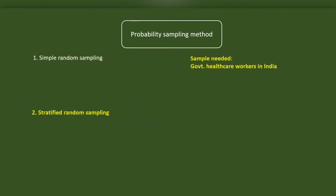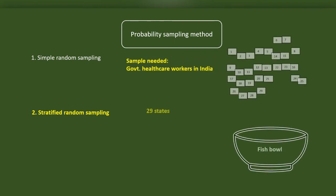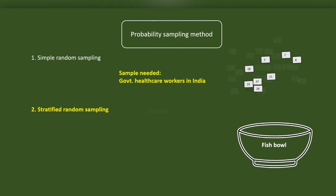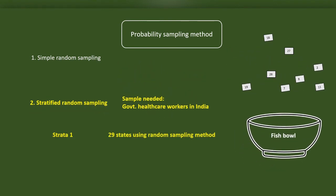Stratified sampling is a probability sampling method we may use if we need a representative sample based on strata. For instance, we like to have a sample of government healthcare workers for our next research, and we need a sample representing the whole India. First, we may conduct a simple random sampling to choose the states in India using a fish bowl technique. Imagine that we chose 8 states. This is the first strata.